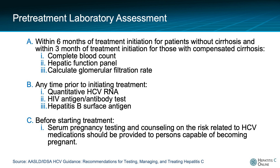A complete blood count, hepatic function panel, and calculated glomerular filtration rate should be obtained within six months of starting hepatitis C treatment for persons without cirrhosis, and within three months of starting treatment for those with compensated cirrhosis. All persons should have a quantitative hepatitis C RNA, HIV antigen antibody test, and hepatitis B surface antigen performed at any time prior to treatment. Persons capable of becoming pregnant should undergo serum pregnancy testing and counseling regarding pregnancy risk of hepatitis C medications prior to initiating treatment.